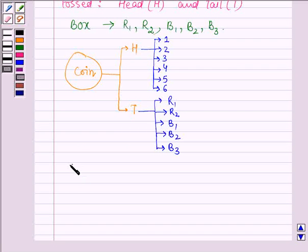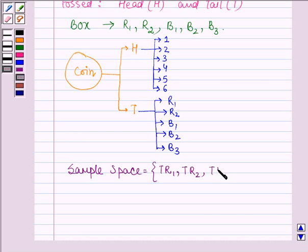So, the sample space for the given experiment is TR1, then TR2, then TB1, TB2, TB3 and with head we have H1. Then we have H2, H3, H4, H5 and H6.